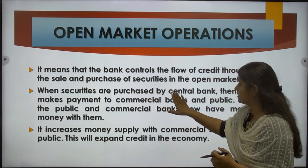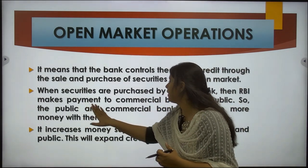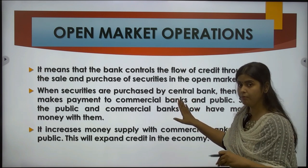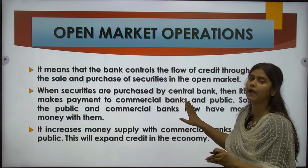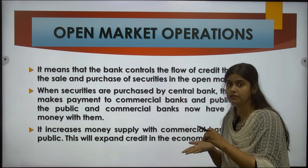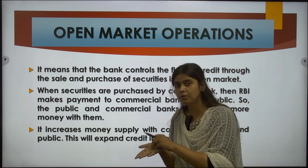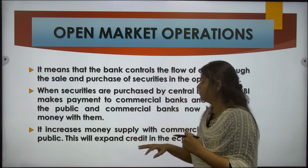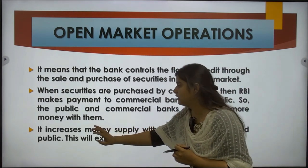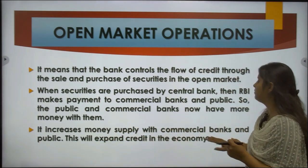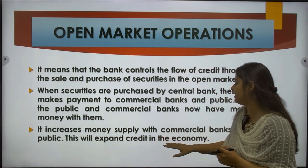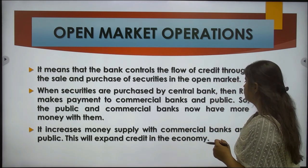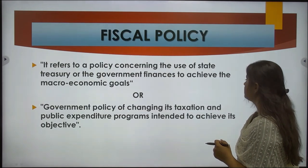When securities are purchased by the central bank, the RBI makes payment to commercial banks, increasing their deposits. The commercial banks can then provide more loans to the public, who now have more purchasing power. This increases money supply with the commercial banks and the public, expanding credit in the economy. So when you need to expand credit in the economy, the RBI purchases securities in the open market.